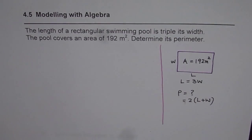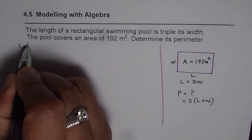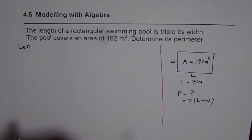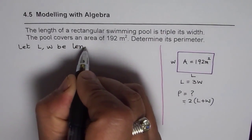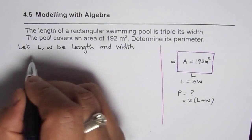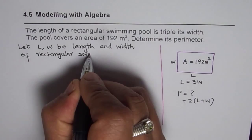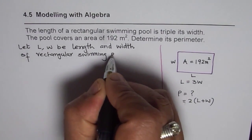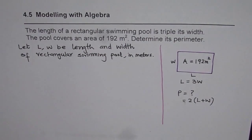Once we have analyzed the situation, we can start solving the word problem. When defining parameters, the first statement should always be a 'let' statement. So: let L and W be the length and width of the rectangular swimming pool, in meters. It's a good idea to introduce units along with the variables.